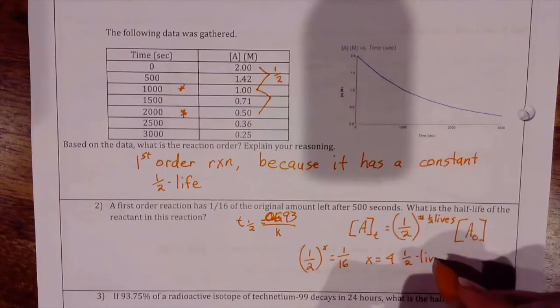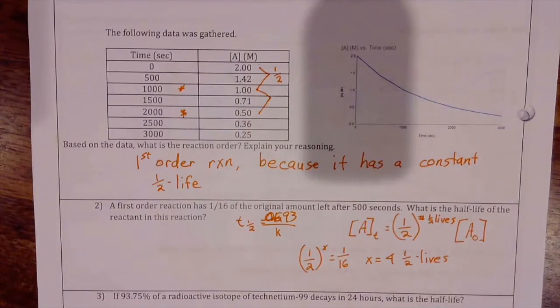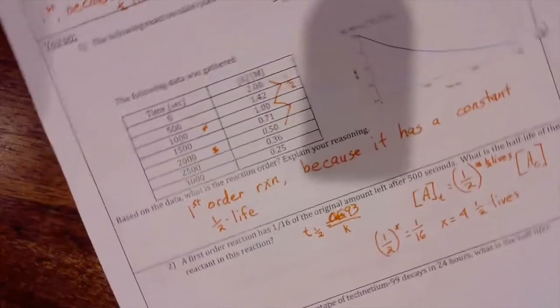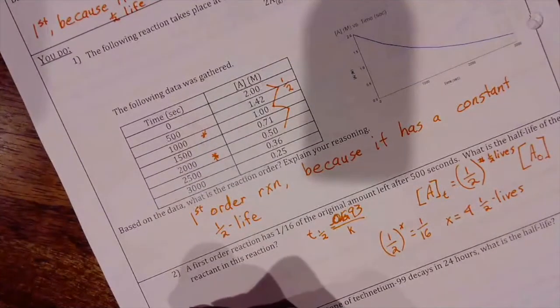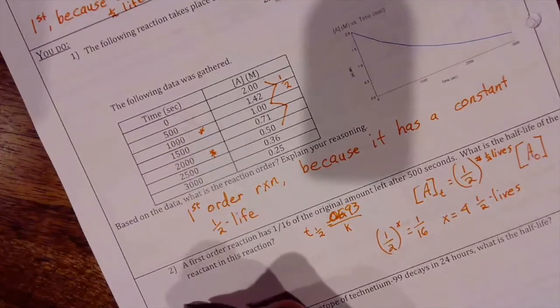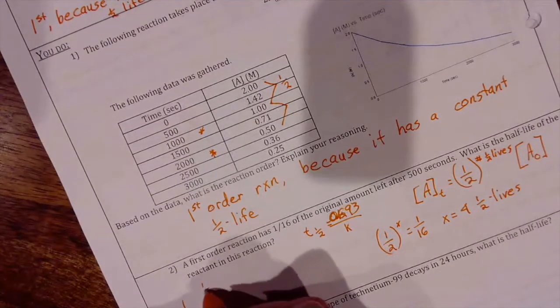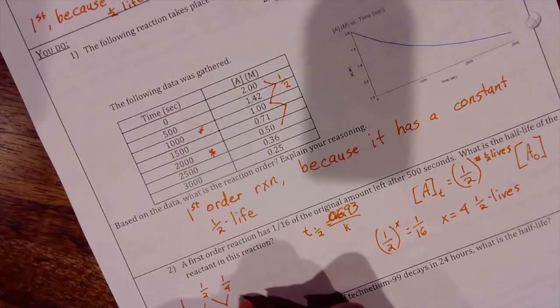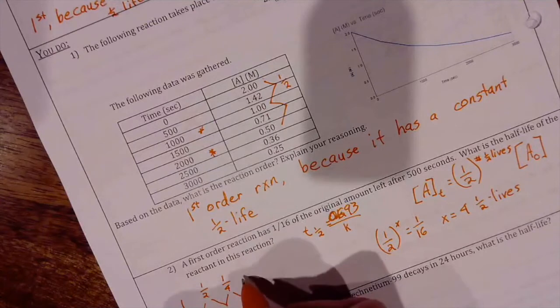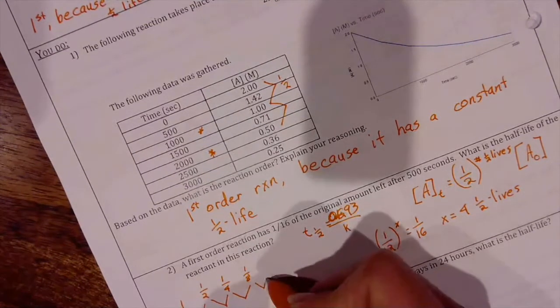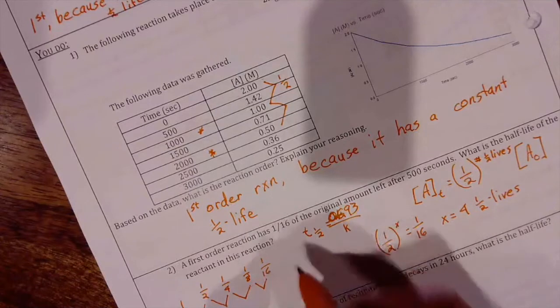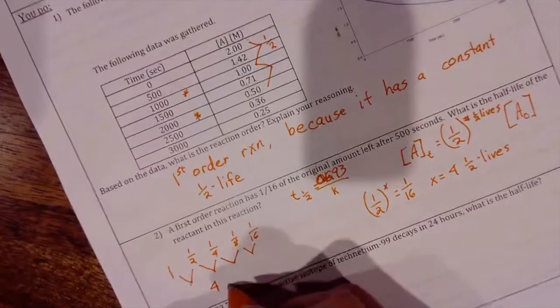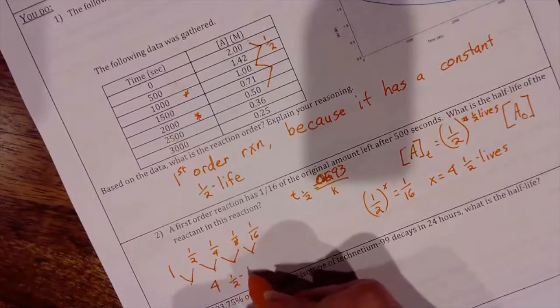The least algebraic way to solve it would be to say, after one half-life it's going from 1 to a half, then it goes to half of a half which is a fourth, then it goes to a half of a fourth which is an eighth, and then it goes to a half of an eighth which is 1/16th. And that's 1, 2, 3, 4 half-lives. So we have lots of different approaches to this.